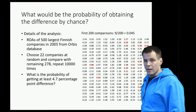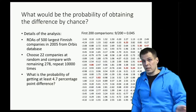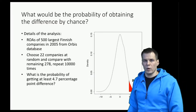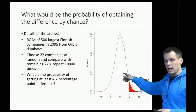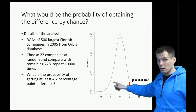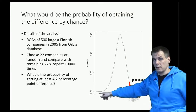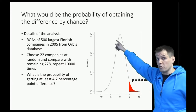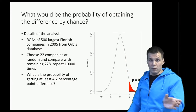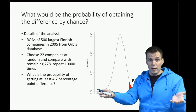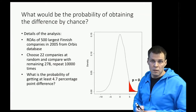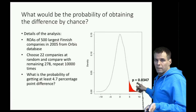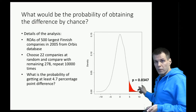Is that enough evidence to conclude that the 4.7 percentage point difference is unlikely to be by chance only? Looking at the bigger picture with 10,000 repeated samples, sometimes we get a large negative estimate, sometimes a large positive estimate, but typically no difference — as expected from random samples. The probability of getting 4.7 percentage points or higher is 0.0347 out of 10,000 replications.